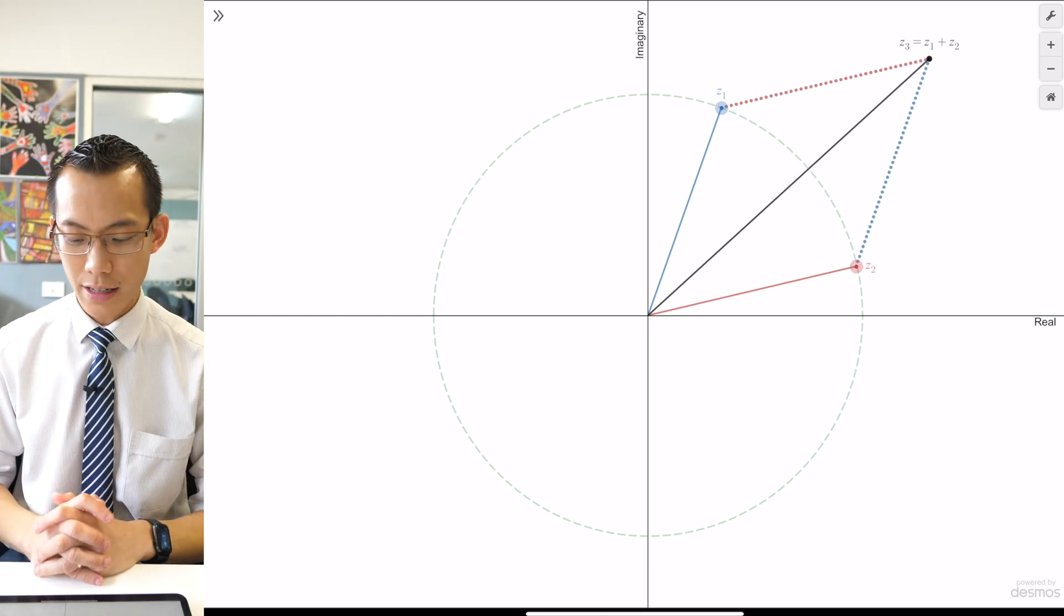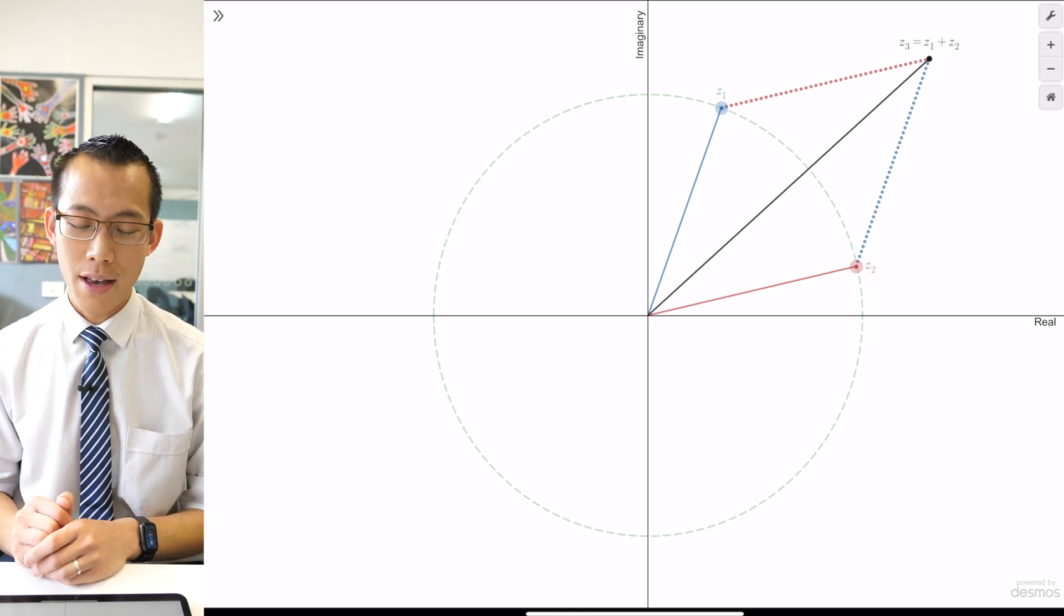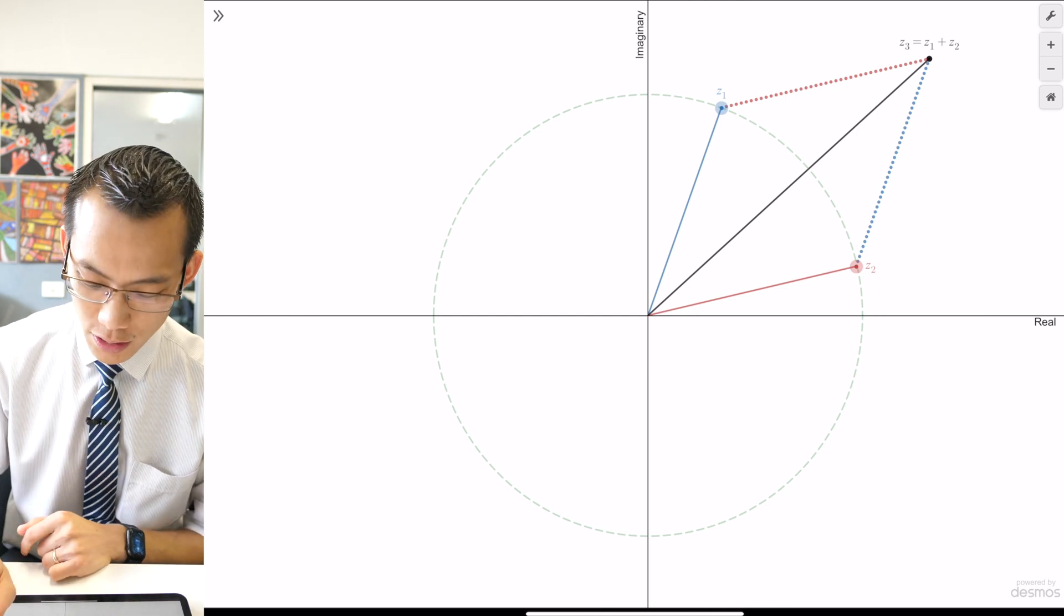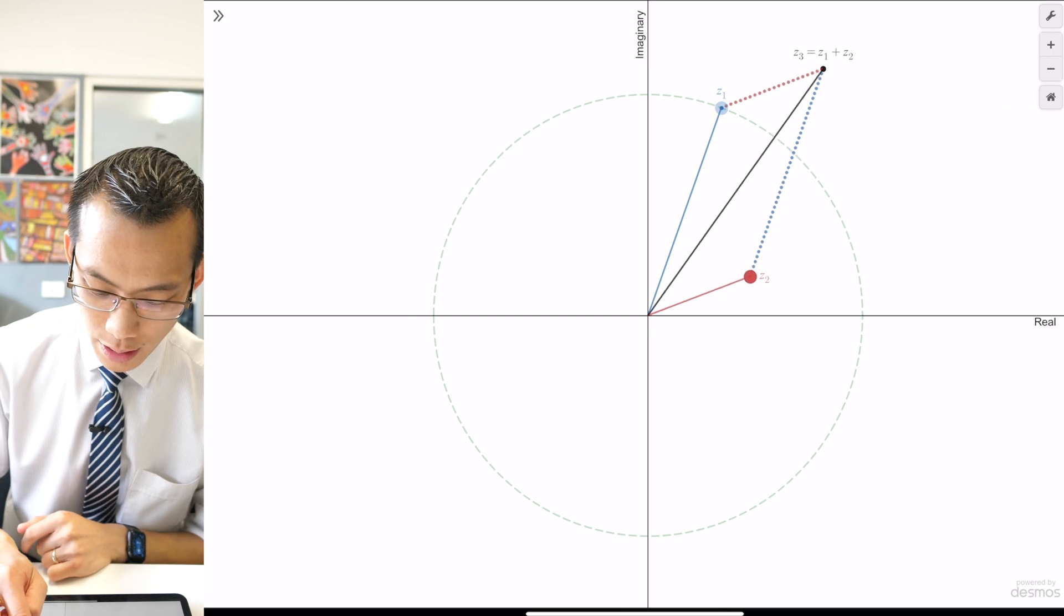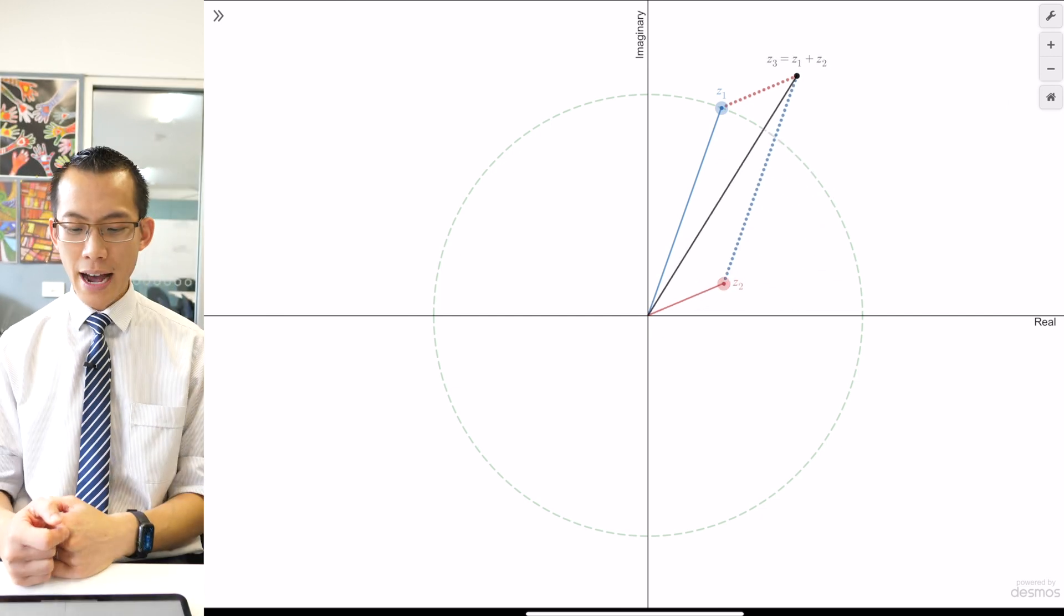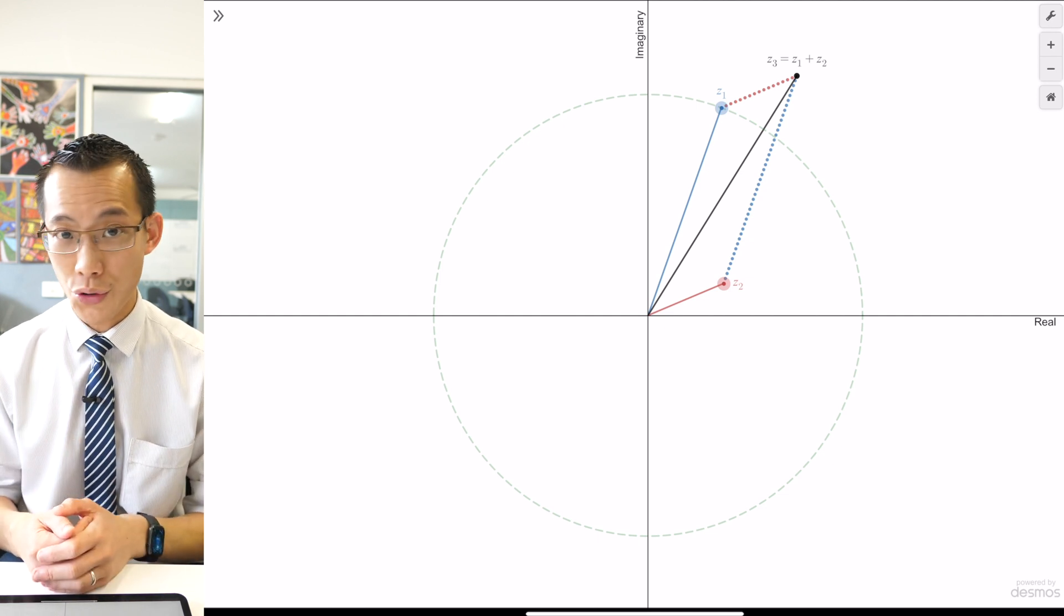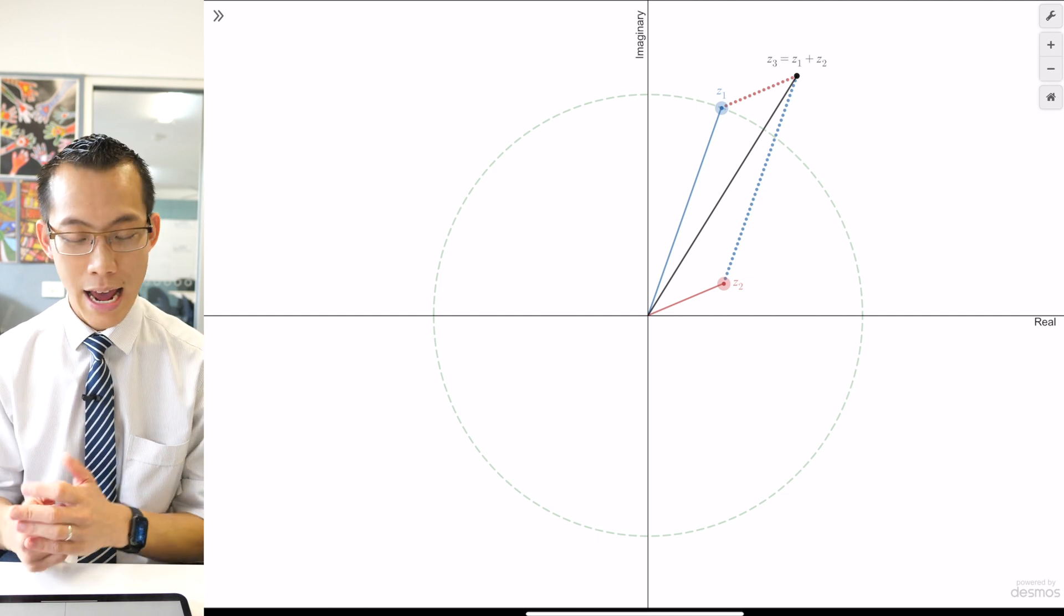I'm going to give you an exaggerated example of if I move Z2 such that it doesn't have the same modulus as Z1. Let's move it in closer here. Okay, now Z1 and Z2 no longer share the same modulus. And so you would expect that our result is not true. And indeed, that is what happens.